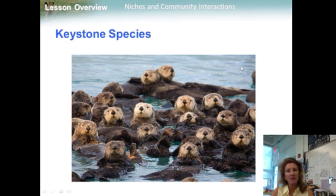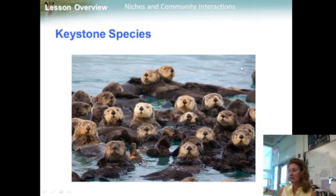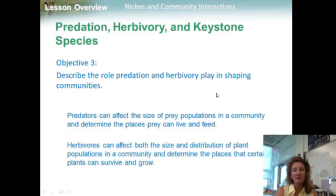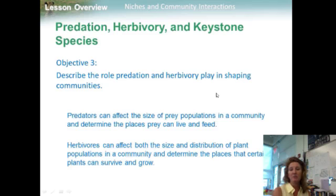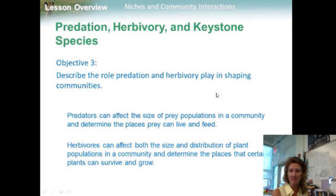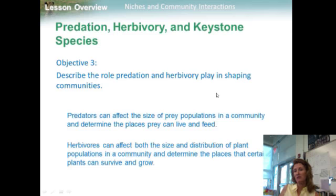Recently, however, the otter population has begun falling again and no one knows why — they're trying to figure that out. Predators can affect the size of prey populations in a community and determine the places prey can live and feed. Herbivores can affect both the size and distribution of plant populations in a community and determine the places that certain plants can grow and survive.